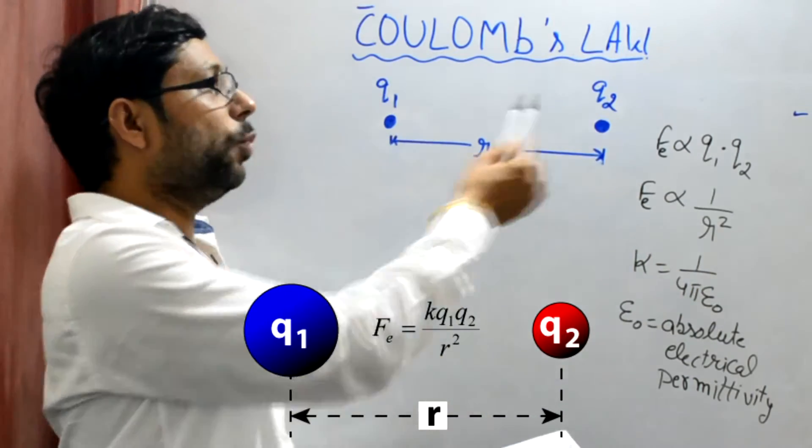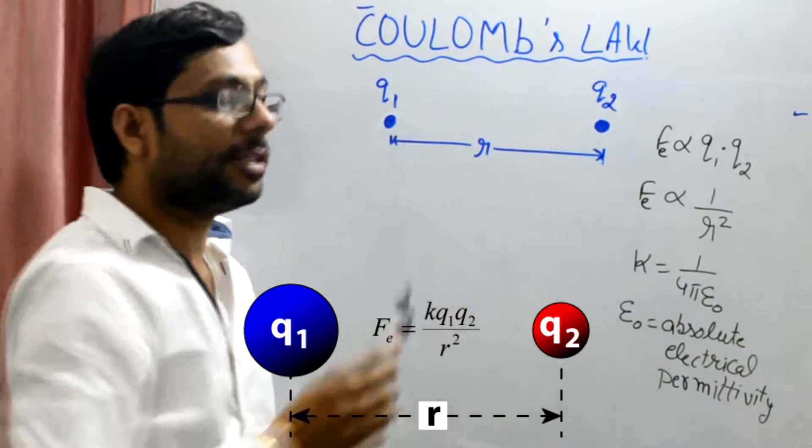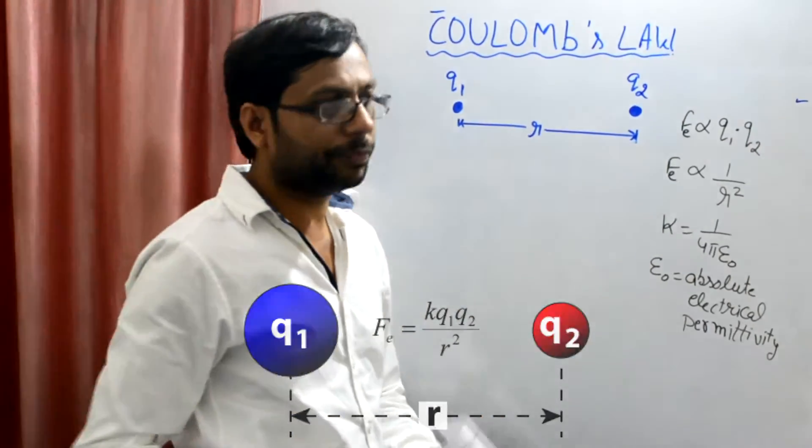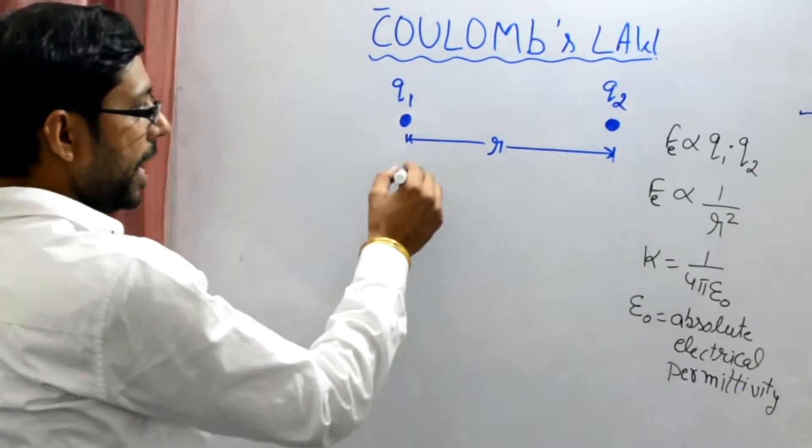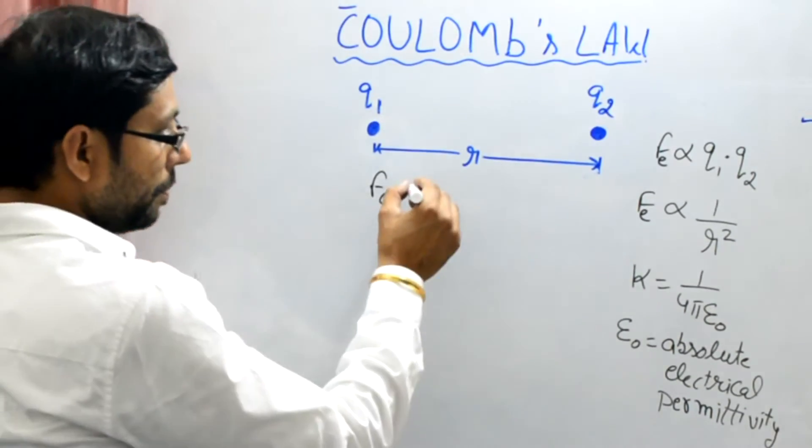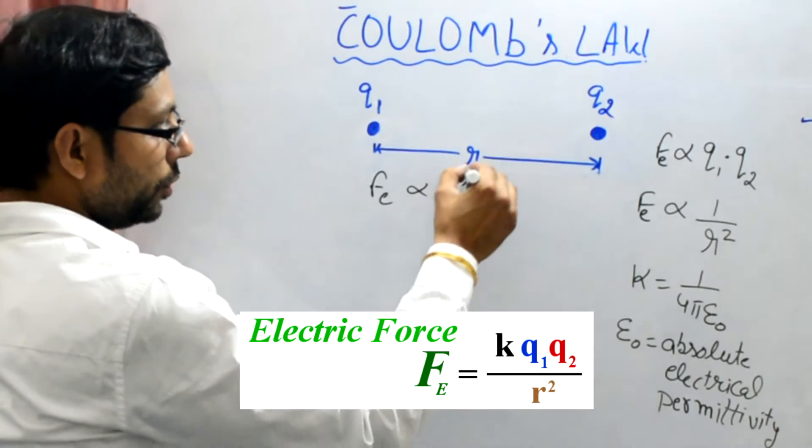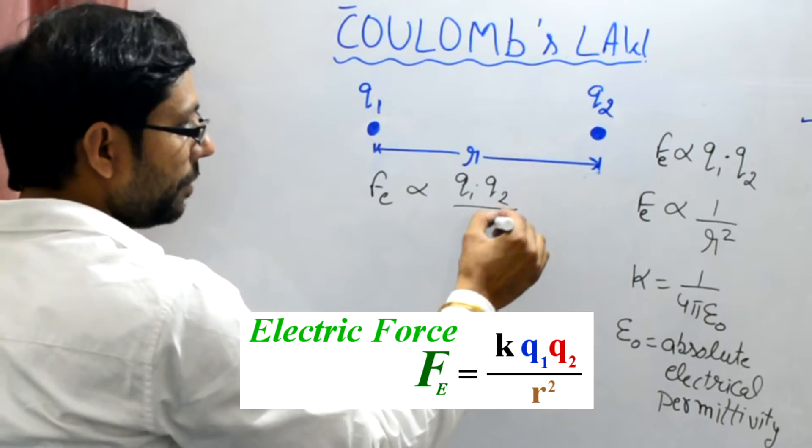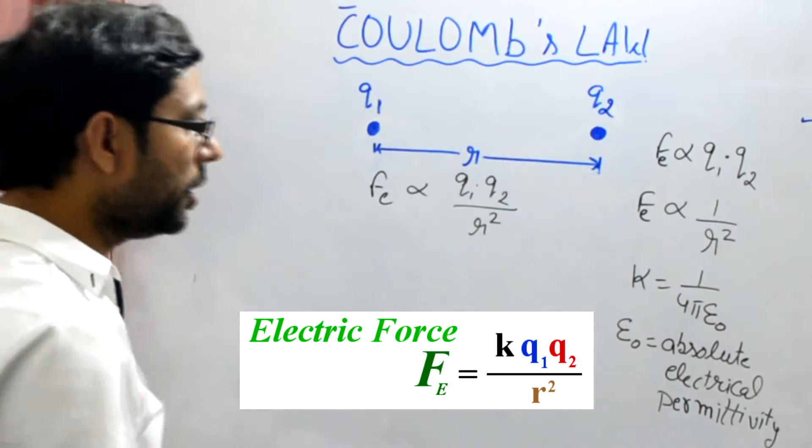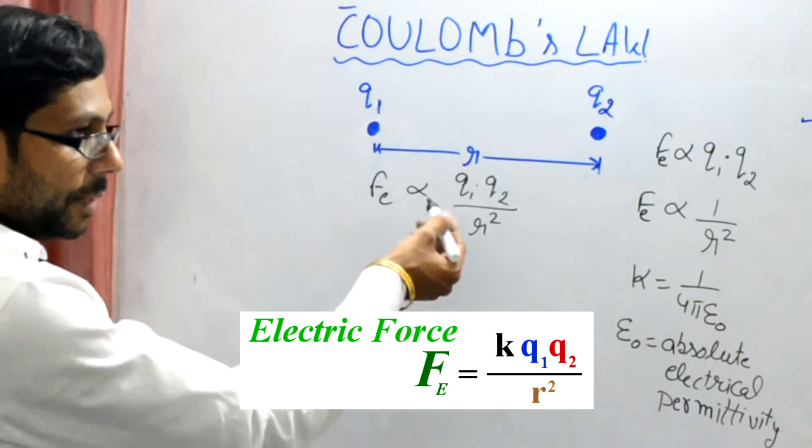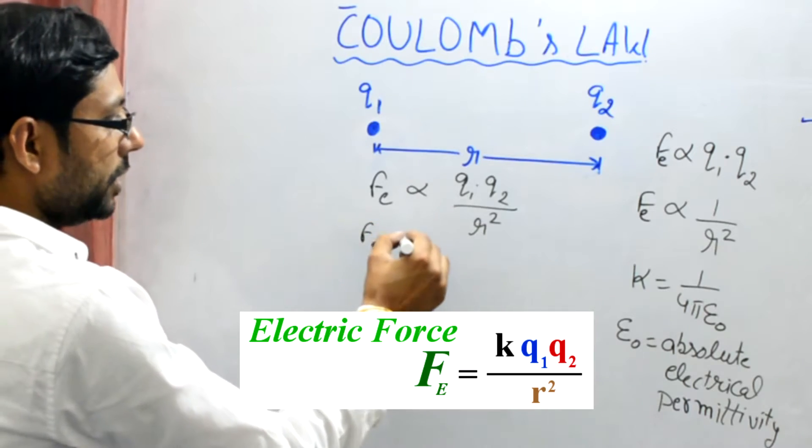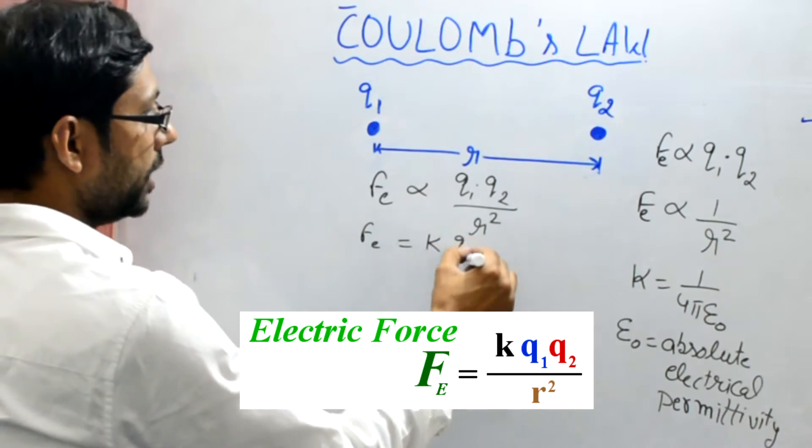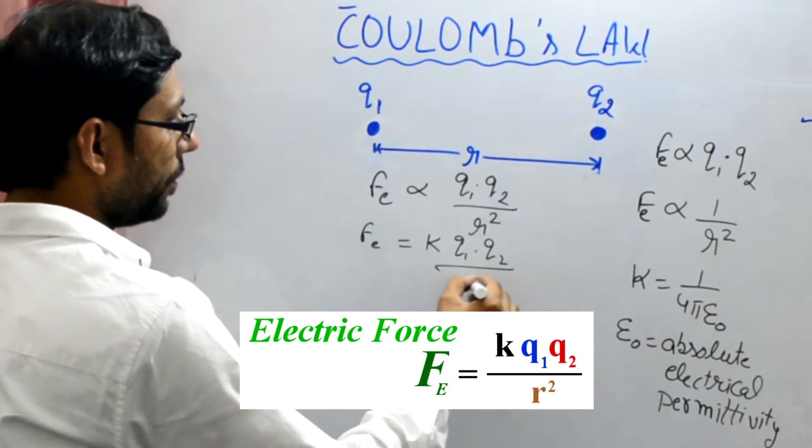Here are the two charges, Q1, Q2, and r is the distance between them. So, as per Coulomb's Law, that electrostatic force must be proportional to the product of two charges and inversely proportional to the square of the distance. To remove the proportionality symbol, we just use a constant K, a constant of proportionality. You can say Q1, Q2 upon r squared.